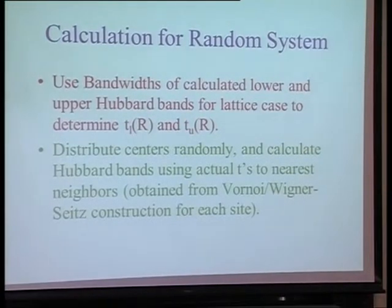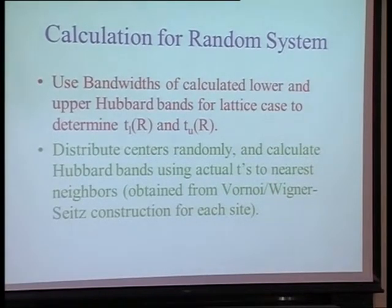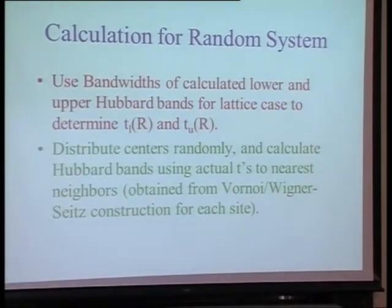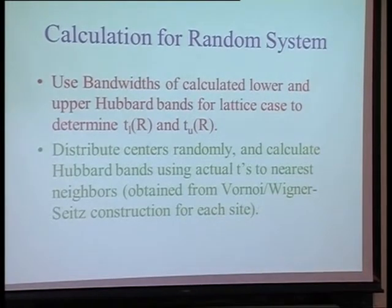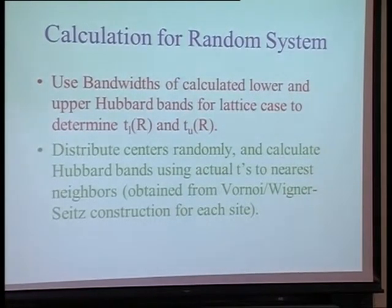So only nearest-neighbor hopping, but in the random case, the nearest neighbors are defined by a Wigner-Seitz construction. So many have five, some have seven, and on average they have six.